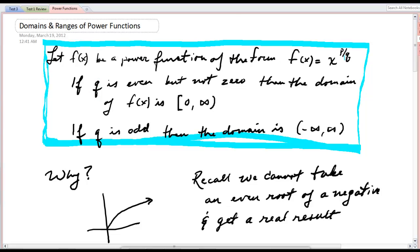it says if q, q being the denominator there, if q is even but not zero, then the domain of f of x is 0 to infinity, inclusive of 0. So I'm saying that if the denominator is even, then you will only have inputs from 0 and to the right on your x-axis.